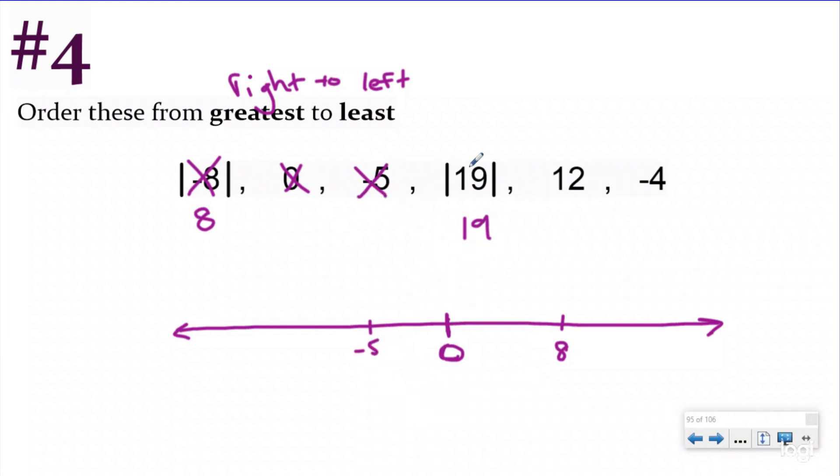I have 19, the absolute value of 19 is 19. So further to the right than eight, somewhere maybe over here. Okay. I have 12, which is bigger than eight, but less than 19. So let's put it right here. And then I have negative four.